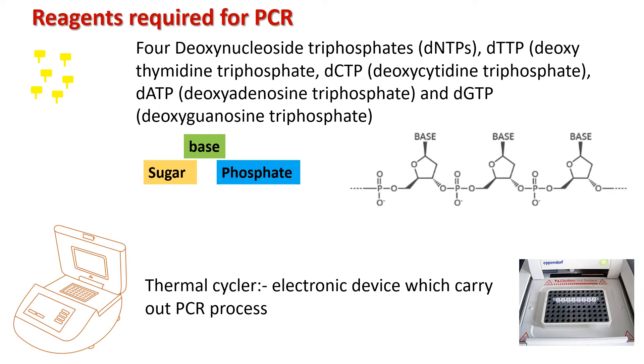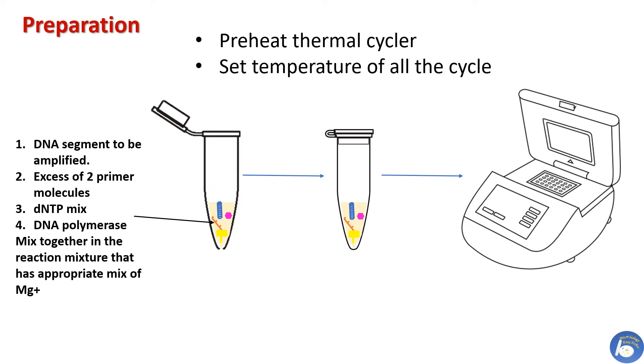Preparation of PCR: First, preheat the thermal cycler by setting the temperature of all cycles. Then in a PCR tube, recommended amounts of every component should be pipetted. These components are the DNA segment to be amplified, excess of two primer molecules, DNTP mix, DNA polymerase, and the PCR buffer. Now keep all the PCR tubes in the thermal cycler and let the operation run.